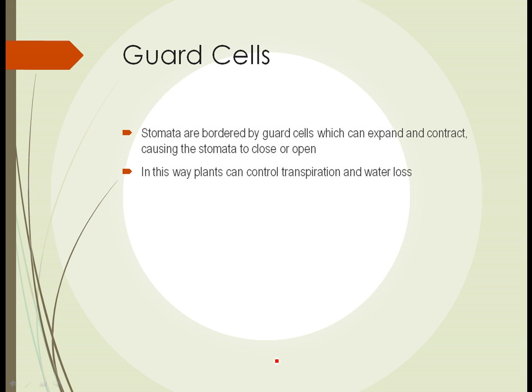Guard cells border the stomata on either side. This is a pair of cells which can expand and contract, causing the stomata to close or open. When they're expanded it forces the stomata shut; when they contract it pulls the stomata open. This is how plants control transpiration and water loss, and is critical particularly for plants in arid environments.